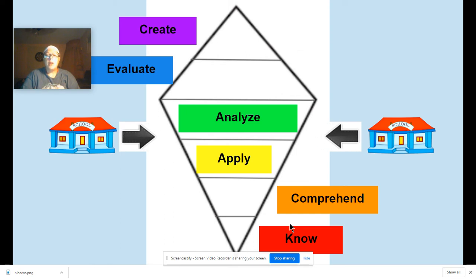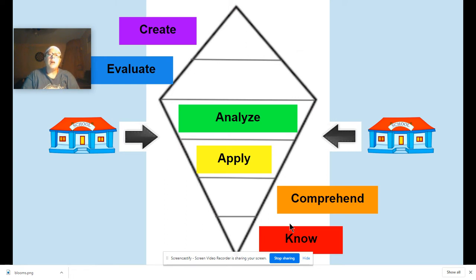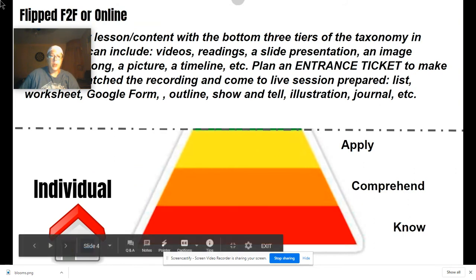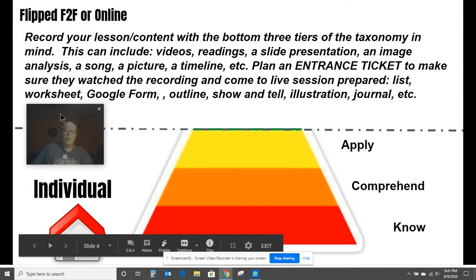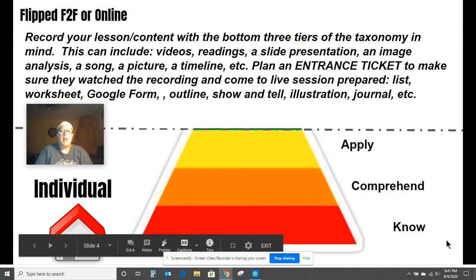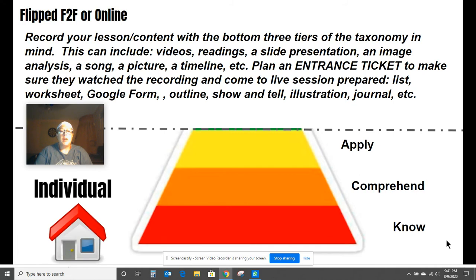The knowledge and comprehension levels are outside of the kite — they're down below — and this is done at home with a standalone Google Classroom assignment or a video you're showing. When students are doing the bottom levels of the taxonomy, they're doing it at home without you. This is the material that normally takes up time in a regular class session, which you can now eliminate.